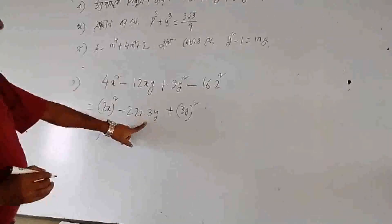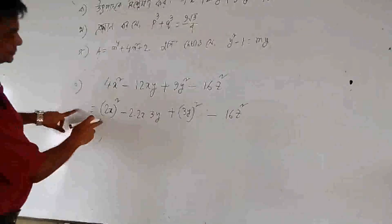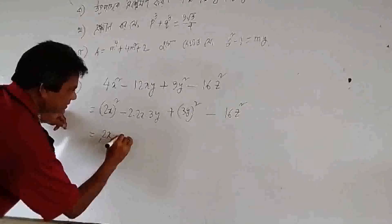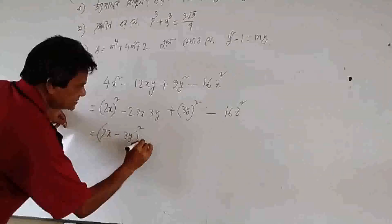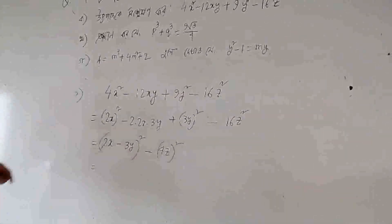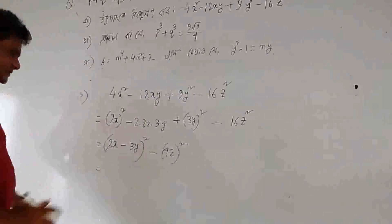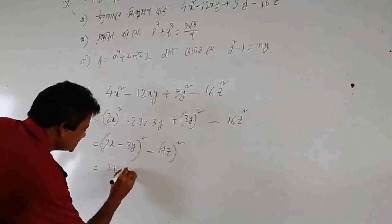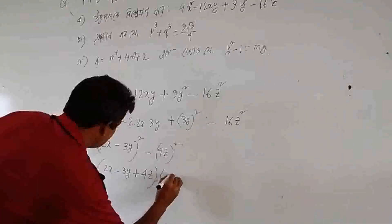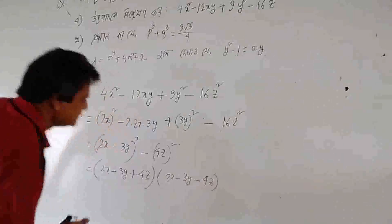2 x squared, minus 2 x squared, plus 2 x squared. A plus b, a minus b: 4 x squared minus 2 x squared, minus 4 x squared. 2 x minus 2 x minus 1 plus b.